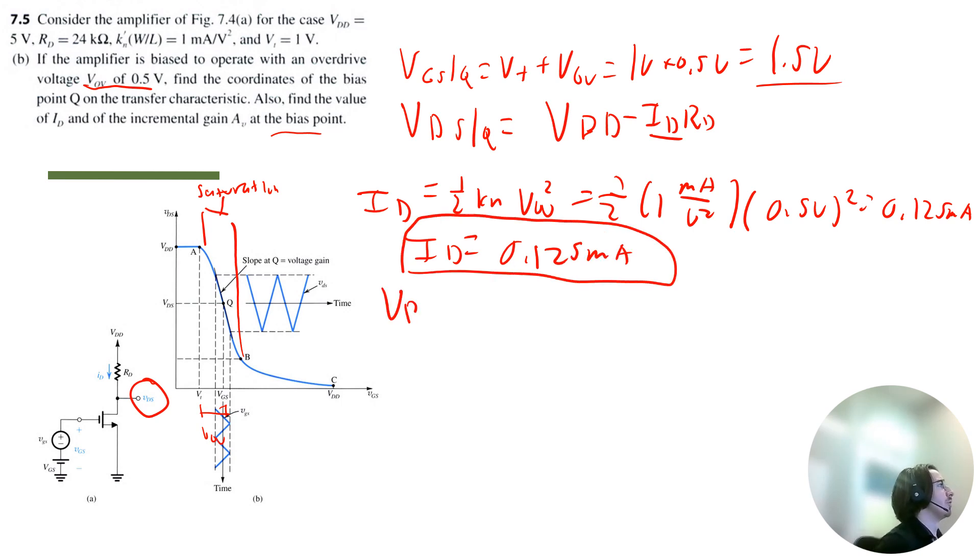So we actually already solved for our current now. Now I can go back and solve for VDS at Q. That's going to be VDD, 5 volts minus the current 0.125 milliamps multiplied by RD, which is 24 kilo ohms. And that is equal to 2 volts. So our coordinate for Q, VGS is 1.5 volts and VDS is 2 volts.